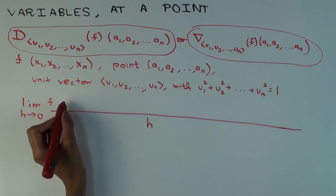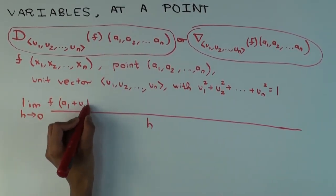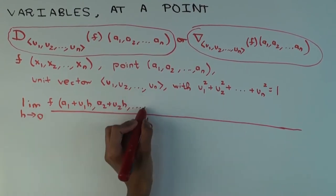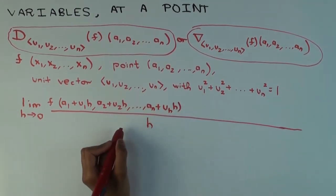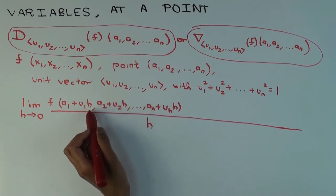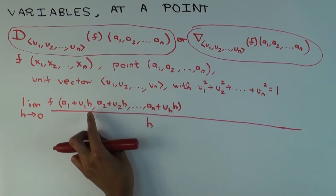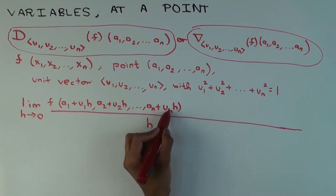What's the numerator going here? a₁ plus u₁h, a₂ plus u₂h, and all the way to aₙ plus uₙh. We move along the direction of this vector by amount h. And that's why the unit vector matters, because if it's a unit vector, then moving a distance of h just means moving by u₁h, u₂h and so on.